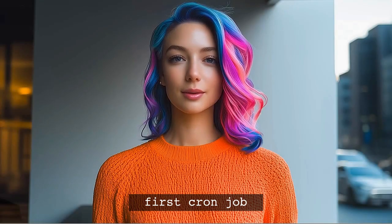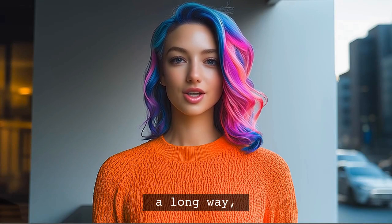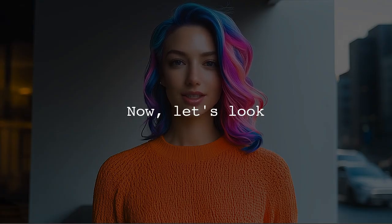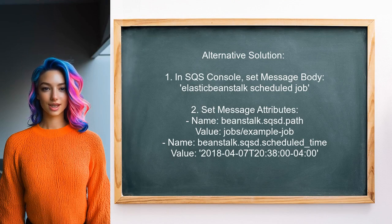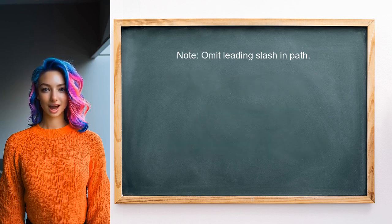Fun fact: the first cron job was created in the 1970s — it's amazing how far technology has come, but some challenges remain the same. One alternative approach is to manually send a message from the AWS SQS console to simulate the cron job. In the message body, enter Elastic Beanstalk's scheduled job. For message attributes, set beanstalk.sqsd.path to your job's URL without a leading slash, and beanstalk.sqsd.scheduledTime to your desired scheduled time.